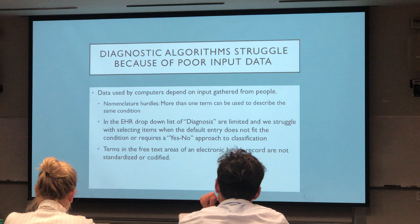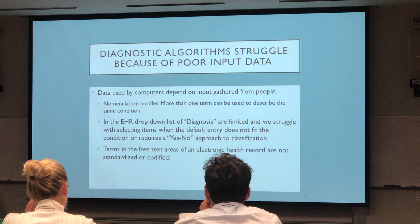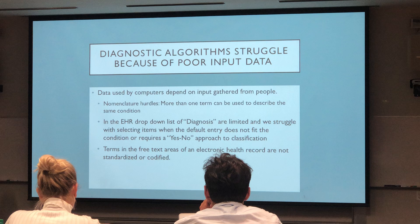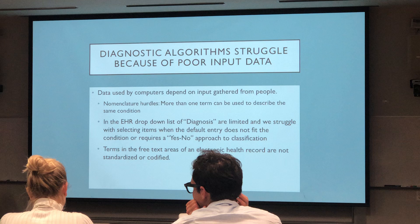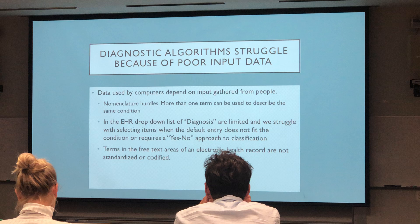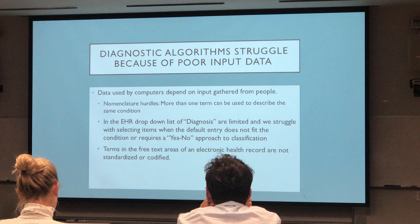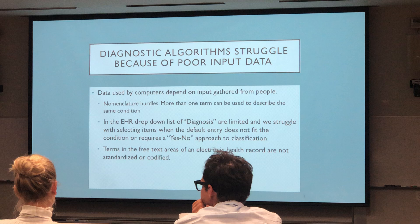Most of you have dealt with electronic health records like Epic. When we put in a diagnosis, we click on the drop-down window, and many times we have to make compromises on how we want to make a diagnosis. Electronic health records don't include all the medical diagnoses in medicine that we want, and they're still working on improving that. When we try to develop algorithms, the computer needs to be able to read free text, and that's something where machine learning is going to be coming in the next few years.